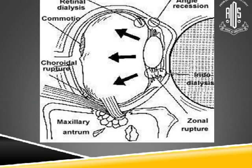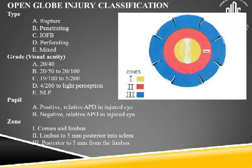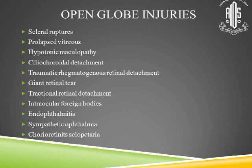I'm not going to go into detail about open globe and closed globe injuries, but just a quick review. Closed globe injuries include vitreous hemorrhage, retinal dialysis, traumatic detachments, macular holes, ruptures, and subluxation and dislocation of the lens. Open globe injuries include scleral ruptures, hypotonic maculopathy, vitreous prolapse, traumatic detachments, giant retinal tears, intraocular foreign bodies, and others.